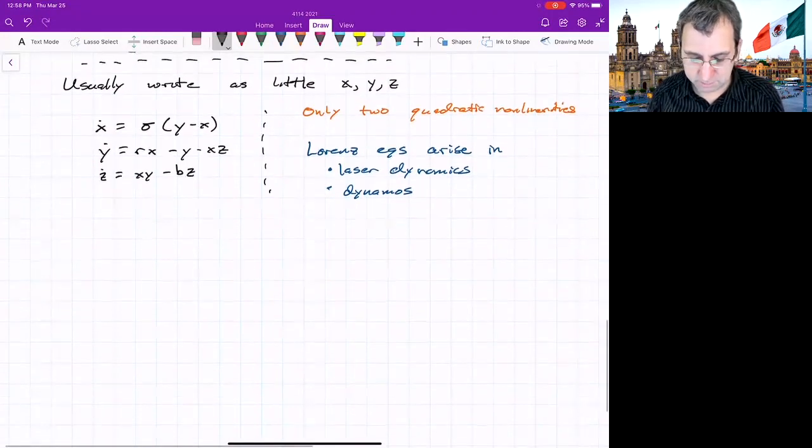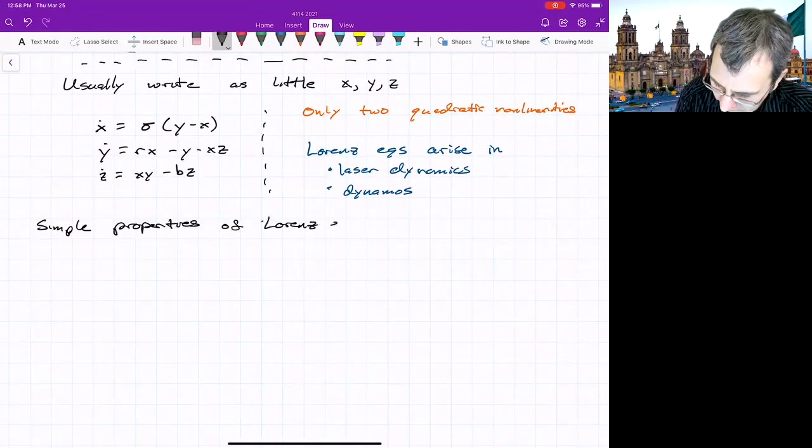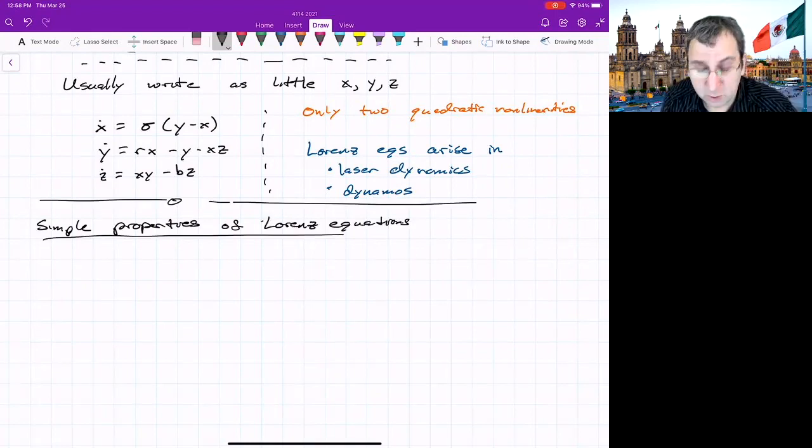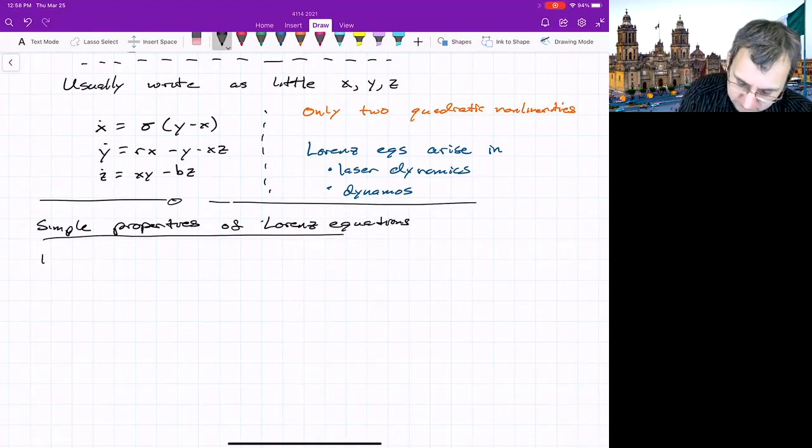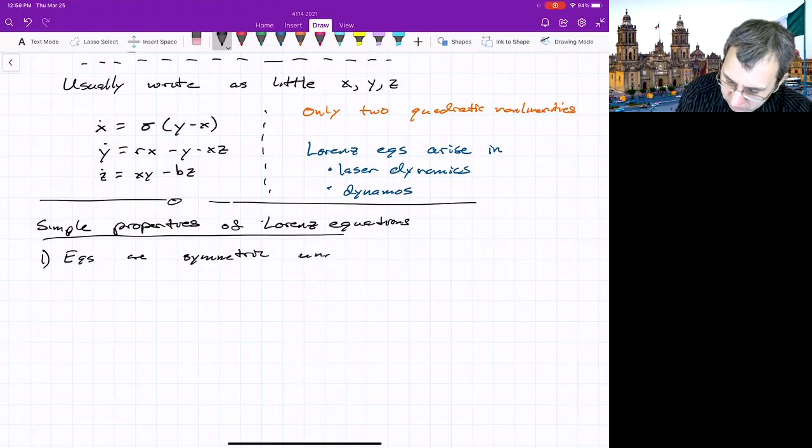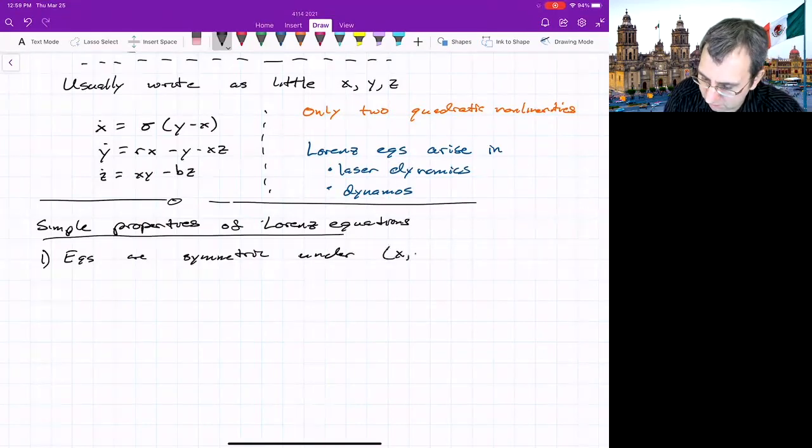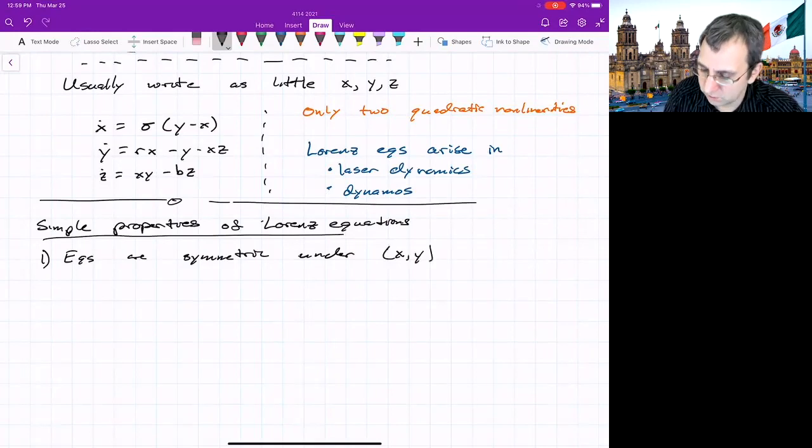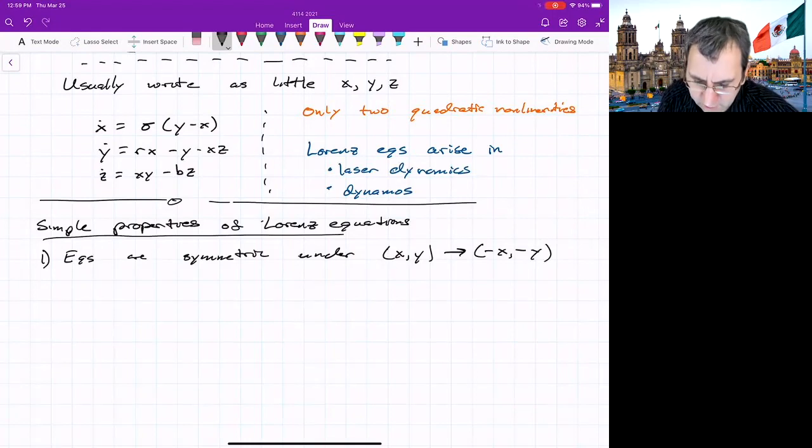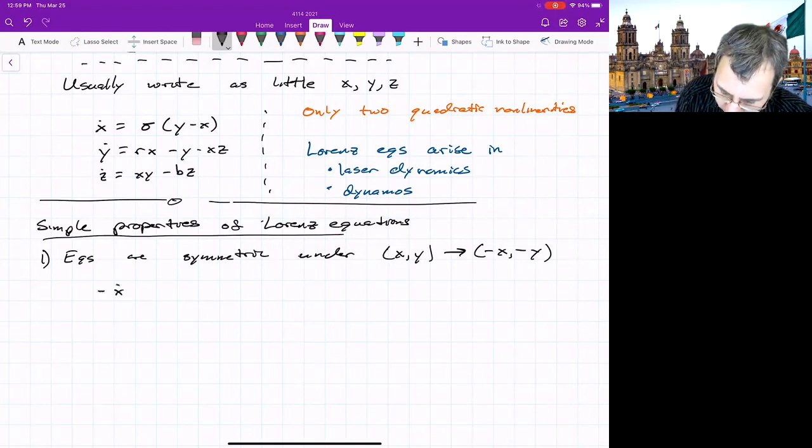There's some properties that we could talk about for this system. The Lorenz equations. The equations are actually symmetric, and that's significant. They're symmetric under if you have x and y go to negative x, negative y. And hopefully you can see that in the first equation, right? If we just substitute negative x for x and negative y for y for all these, we'll get negative x dot equals sigma negative y plus x, and it ends up being the same.